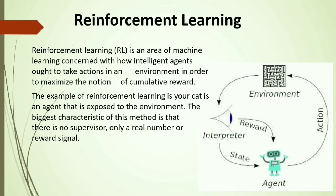In the reinforcement learning diagram, the environment represents the real world. For example, making this video is the environment. State is the current situation — currently making the video is the state. Action is speaking and communicating. The reward is your feedback. The agent is the actor performing actions based on the environment. An environment is a big container inside which you have state; state keeps changing, and at every time period, state changes and action also changes accordingly. With each action, state gets triggered and you get the reward.